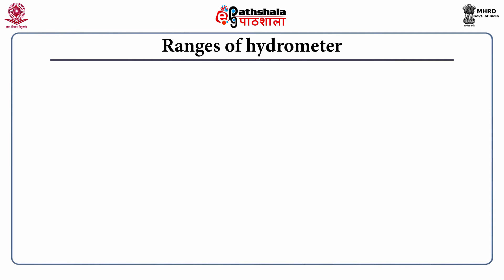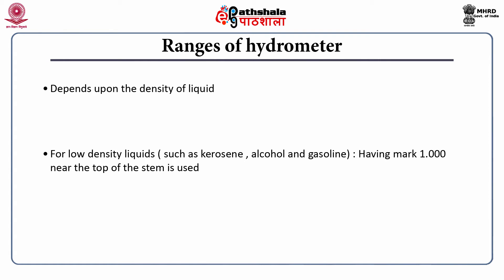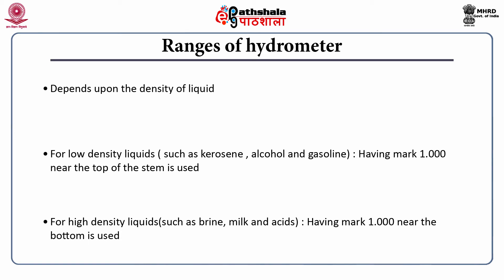You have two ranges of hydrometer depending upon the density of the liquid. For low density liquids — such as kerosene, alcohol, and gasoline — you have mark 1 near the top of the stem. While for high density liquids — which is brine, milk, and acids — you have mark 1 near the bottom. Individually, depending upon whether you are using high density or low density liquids, the mark needs to be either on the top or the bottom of the stem.